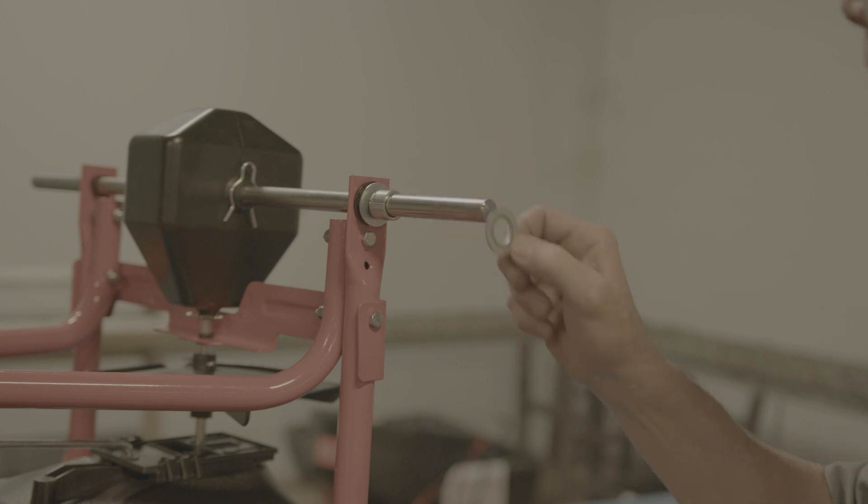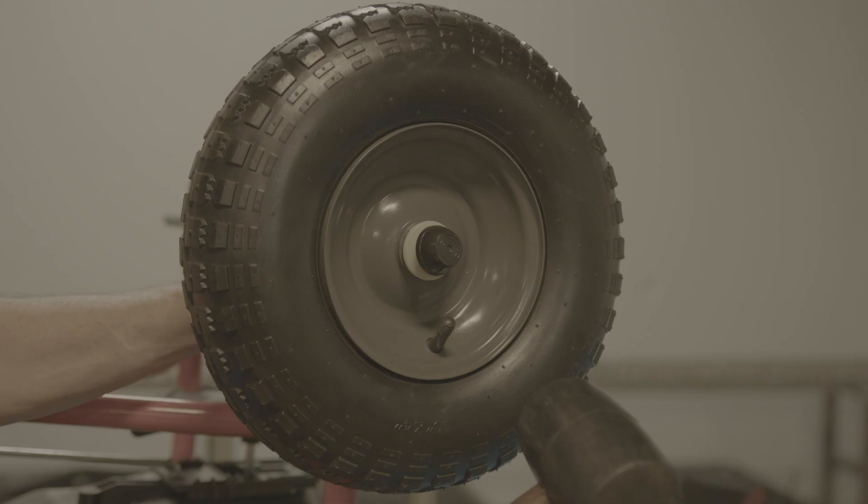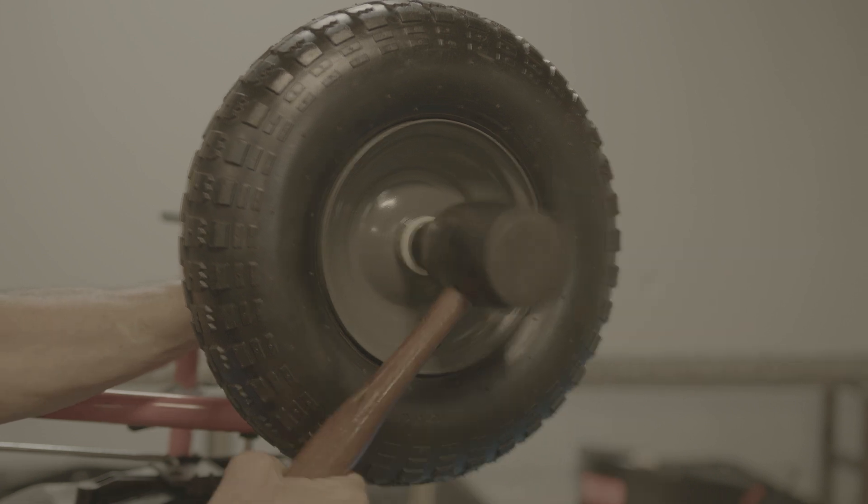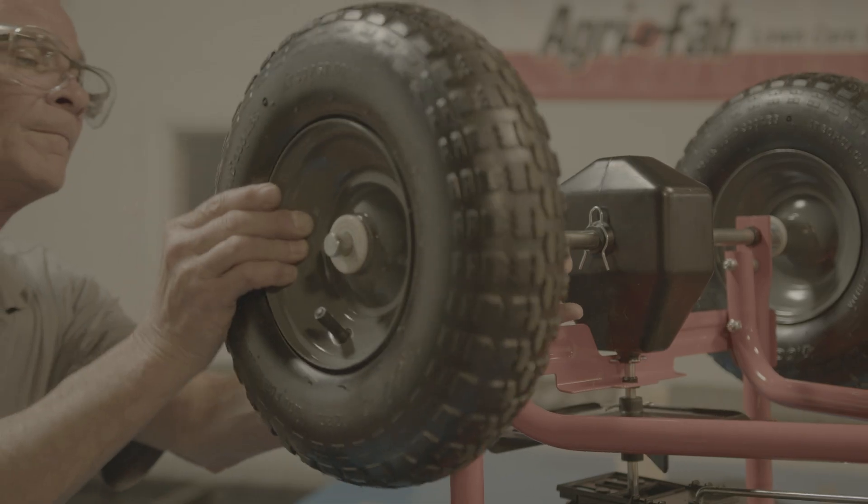We can now put our washers, spacers and wheels back on. On the left wheel, we'll fix the wheel cap kits back into place. Slide the metal ring onto the wheel axle and with a soft rubber mallet, tap the plastic caps into place.